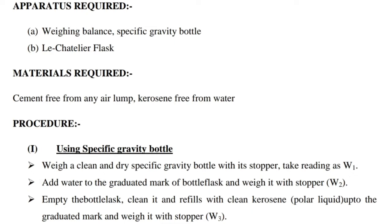Procedure using the specific gravity bottle: Weigh a clean and dry specific gravity bottle with its stopper and take the reading as W1. Next, add water to the graduated mark of the bottle flask and weigh it with the stopper as W2.